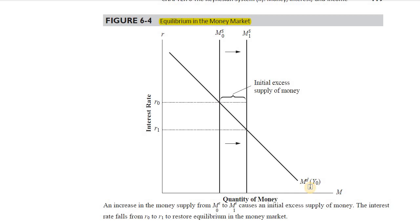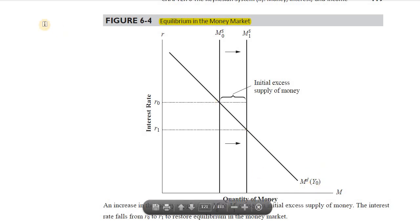But how do we know the level of income in the economy? There is no way we can know it before knowing the rate of interest, because ultimately the rate of interest determines investment demand, investment is part of aggregate demand, and aggregate demand and aggregate supply interaction determines the equilibrium level of income. So if equilibrium level of income is determined by the interest rate, how can we know the money demand curve position based on income we haven't yet determined?